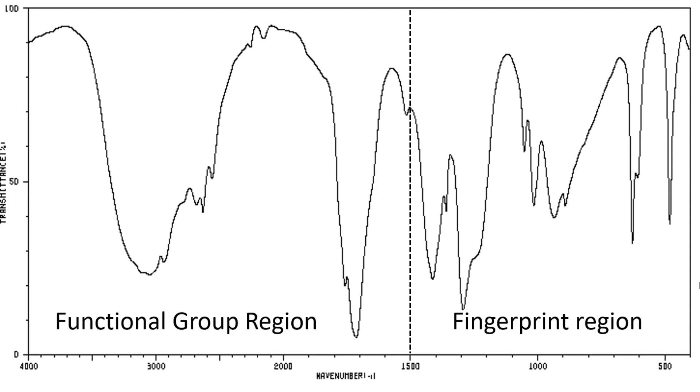On the opposite side, above 1500, we have the functional group region, or as it's also known, the diagnostic region. This region has various points in it that stand out, which we call peaks. And to understand an IR spectrum, you need to work out what each peak is actually telling you.